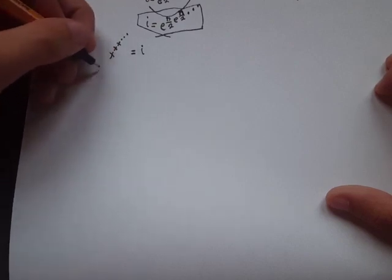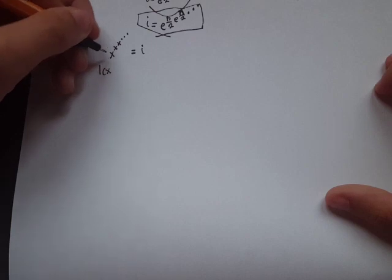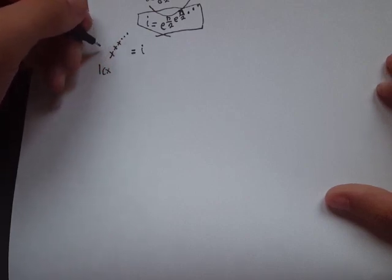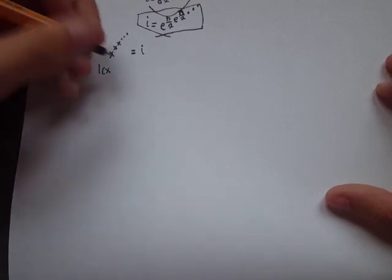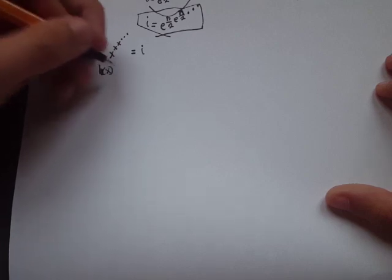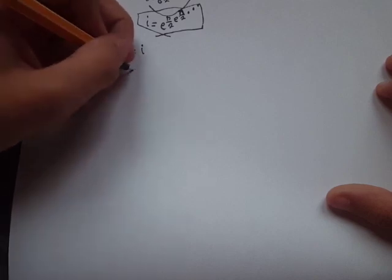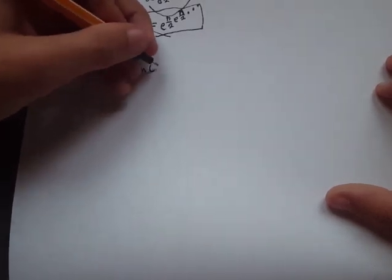We'll take the natural log of both sides, which will bring the whole power tower down and leave us with natural log of x times x to the x to the x dot dot dot equals natural log of i.